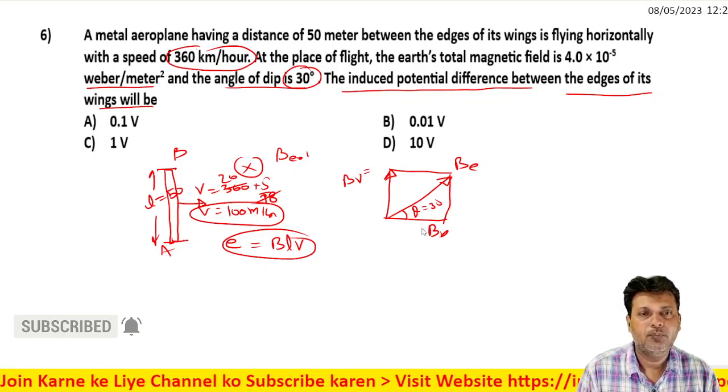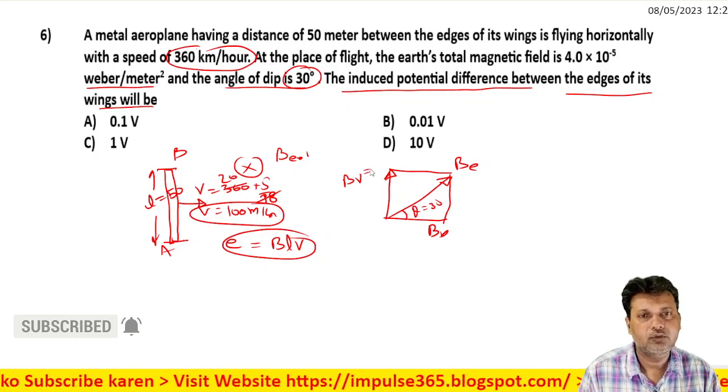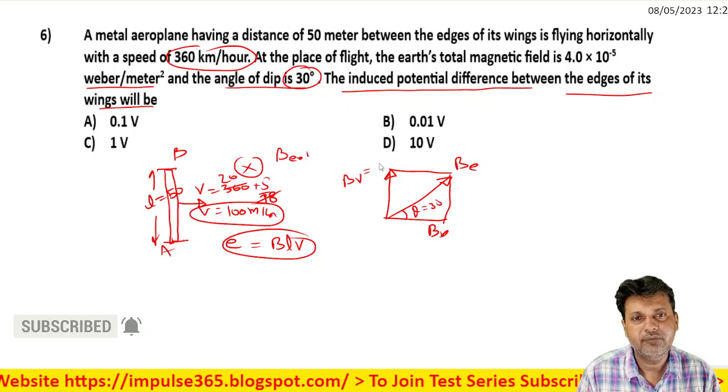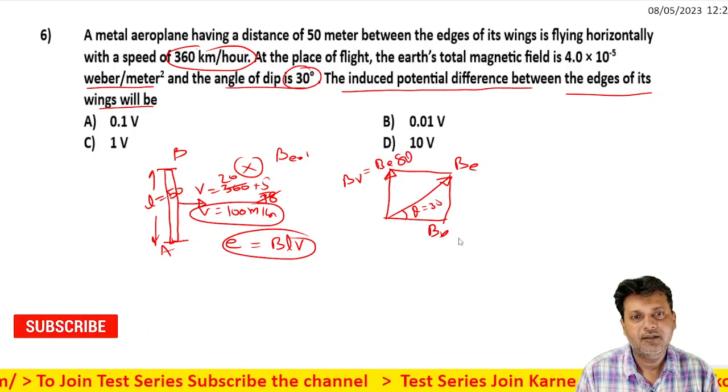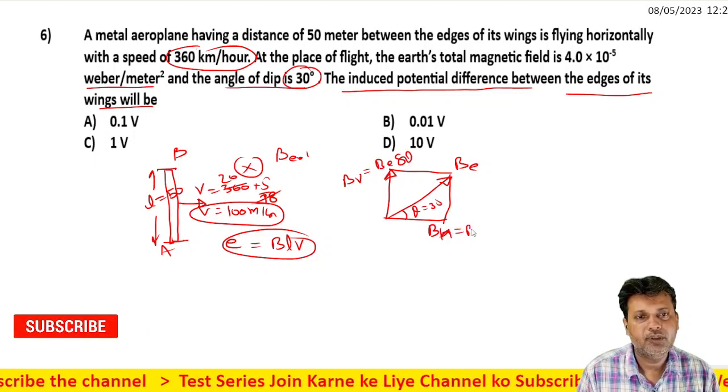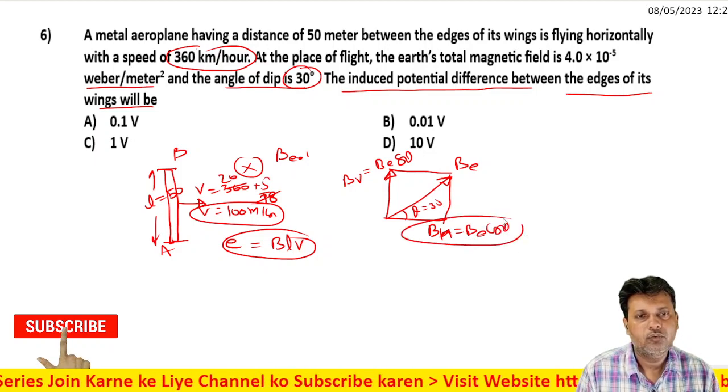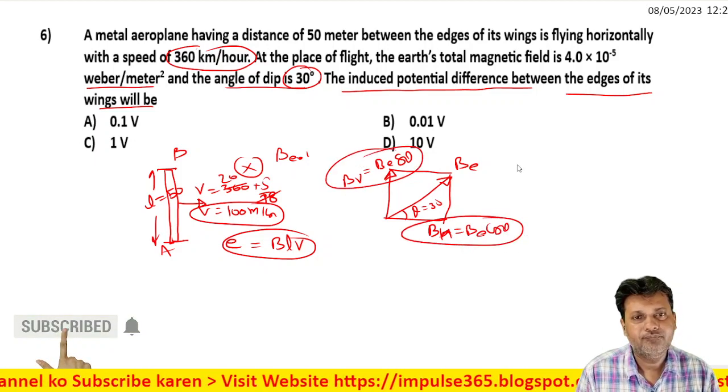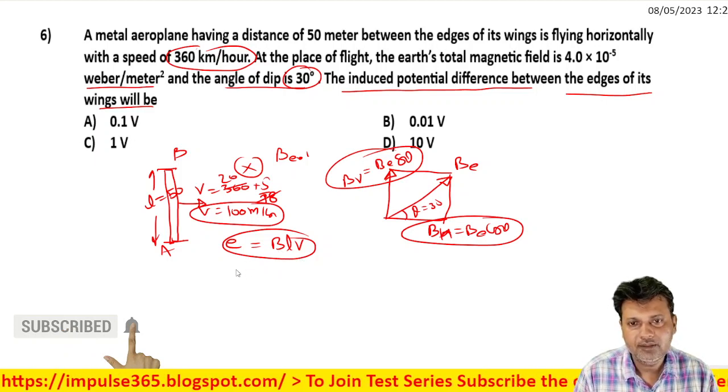When the airplane moves horizontally, the vertical component of the magnetic field is cut. The vertical component is BV = B sin theta, and the horizontal component is BH = B cos theta. The vertical component contributes to the EMF, so EMF = BLV.